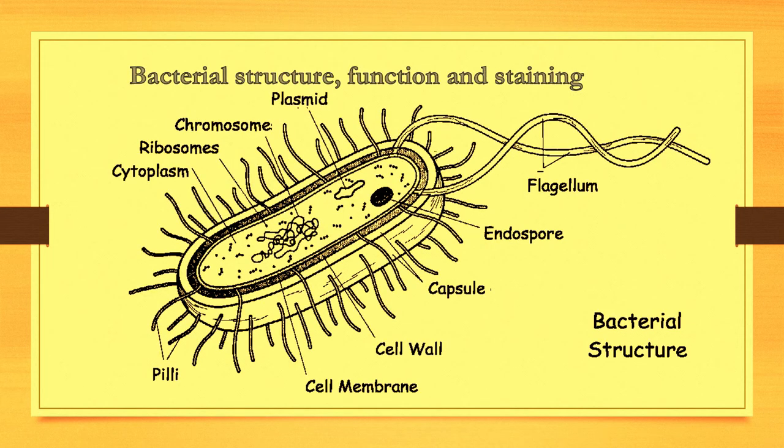This slide shows us the structure of bacteria. All types of bacteria contain four essential structures: nuclear material, cytoplasm, cell membrane, and cell wall, and four optional: capsule, flagella, pili and fimbriae, and spore. Today I will finish the video by talking about the four essential structures.